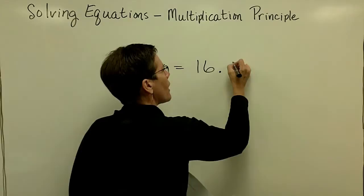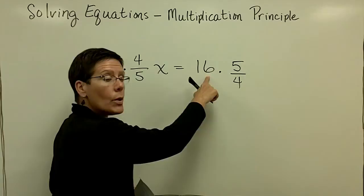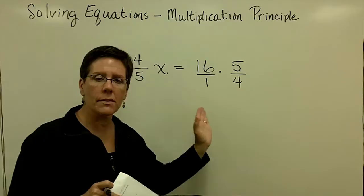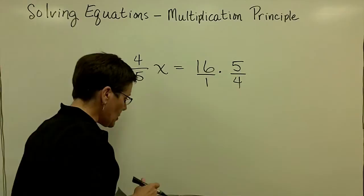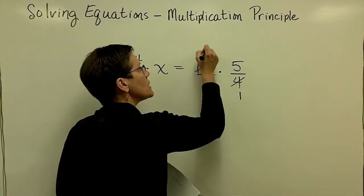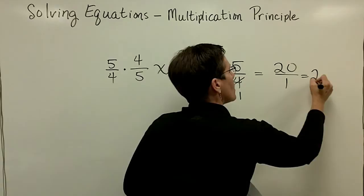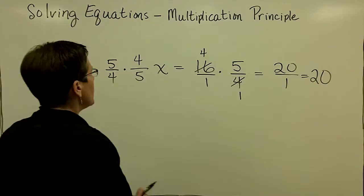I also have to multiply the 16 by the 5 fourths. Whenever you have a whole number or an integer, it can be put over a 1 at any time. So when working with fractions, I keep that value in the numerator and stick a 1 in the denominator. Please remember to reduce if you can. So 4 goes into 16 four times and into 4 once, then multiply straight across. My answer is 4 times 5 which is 20, over 1 times 1 which is 1, so the answer is 20.